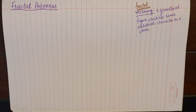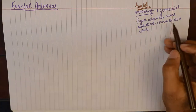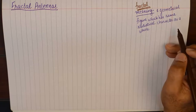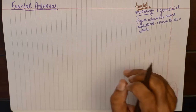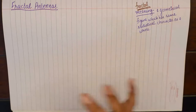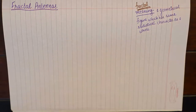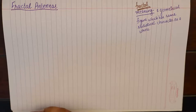Looking into the dictionary meaning of fractal: it says that it is a geometrical figure which has the same statistical characteristics as a whole. This might just look like a vague definition compared to what fractal antennas actually do in real life.